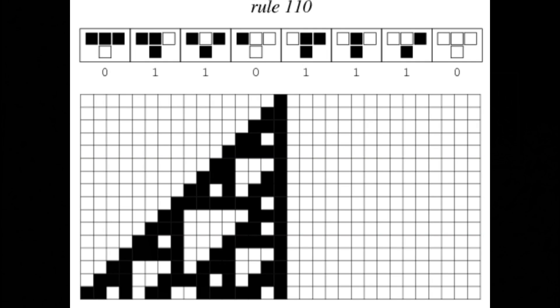Rule 110 was discovered by mathematician Steve Wolfram during careful review of the 256 possible similar bit mapping rules. Why 256? Because the eight rule bits could be any one of 256 possible choices.